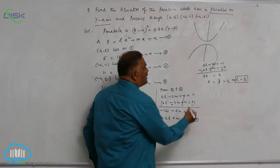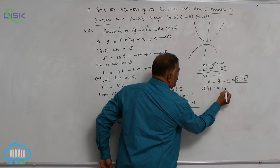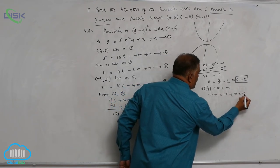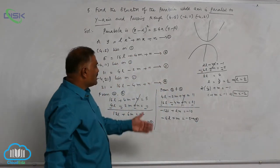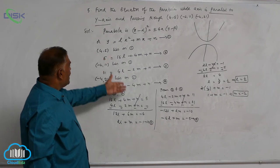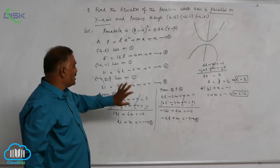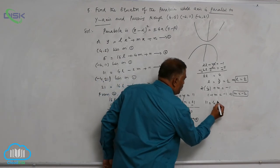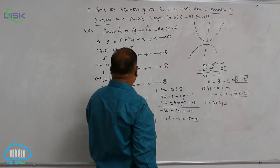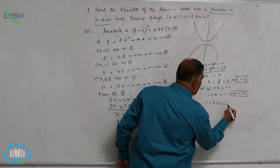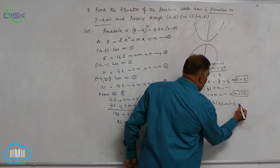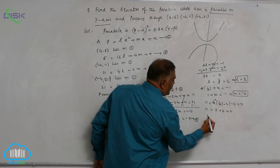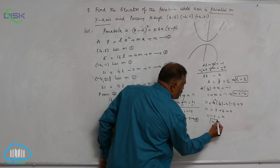Back substitution gives us m. Substituting l equals 1/2 into equation 5: 2 times 1/2 plus m equals minus 1, so m equals minus 2. Now substitute the values of l and m into equation 3: 11 equals 4 times 1/2 plus minus 2 times minus 2 plus n, which gives 11 equals 2 plus 4 plus n, so n equals 5. We now have all three values.